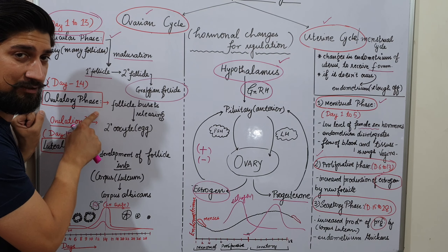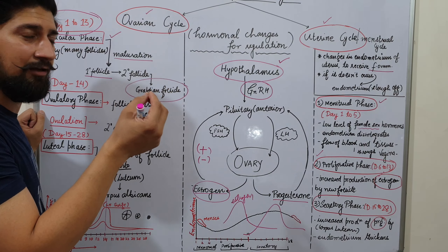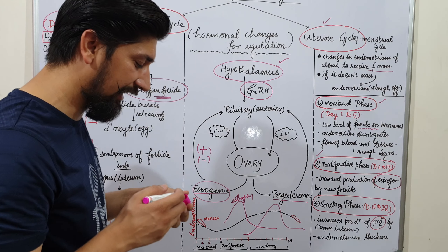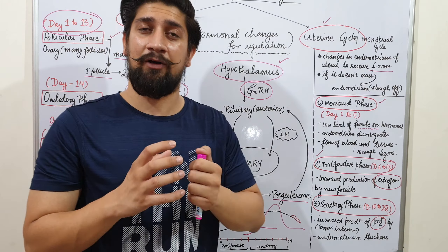Next comes the ovulatory phase, which happens in the middle of the cycle — around the 14th or 15th day of a 28-day cycle. In the ovulatory phase, the Graafian follicle bursts and releases the ovum — this process is known as ovulation. This released ovum has the potential to be fertilized by a sperm cell.